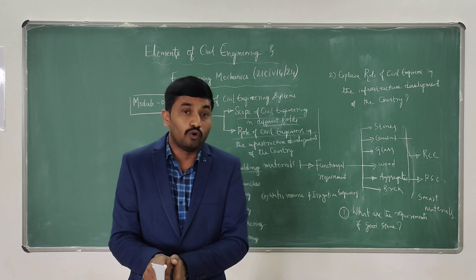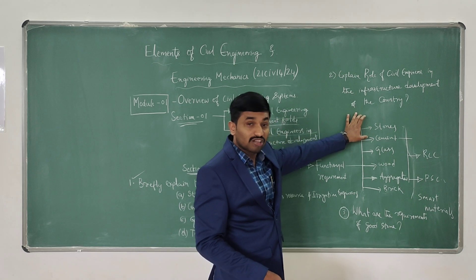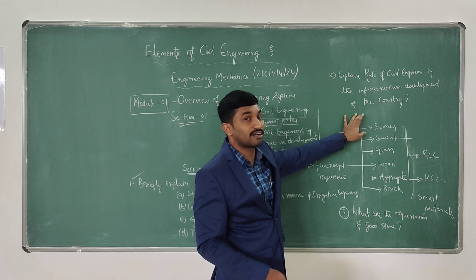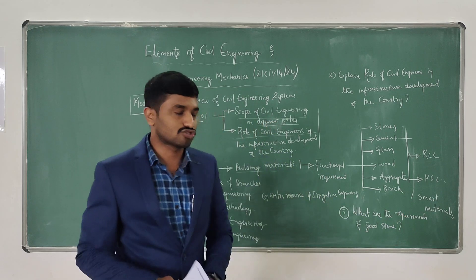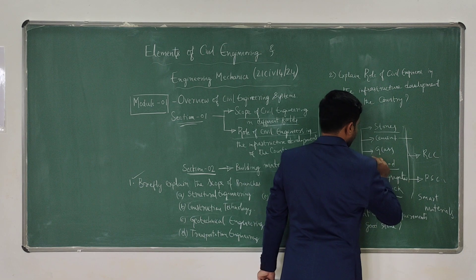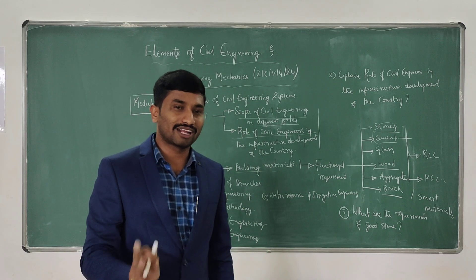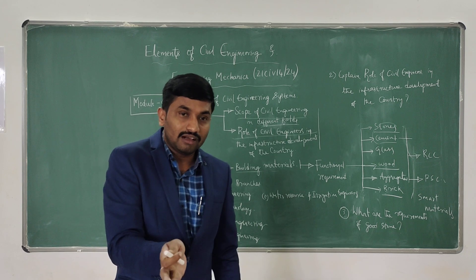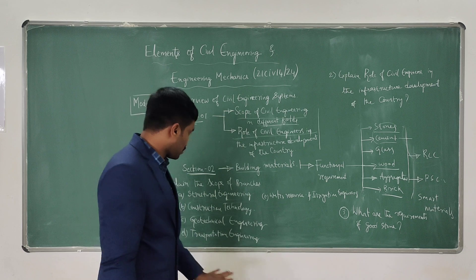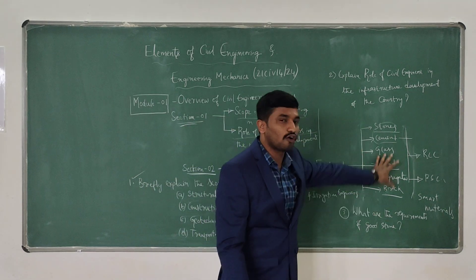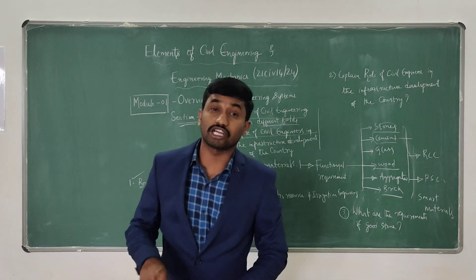From the examination point of view, my suggestion is that students need to understand the requirements for construction activity — the functional requirements of stones, cement, glass, wood, aggregate, and brick. Please read at minimum stones, wood, brick, and cement — these four are very, very important. In the first module, you are getting two questions like 1A/B or 2A/B and you have to answer any one. You need to read materials like stones, cement, wood, and brick for their requirements. Sometimes they may ask advantages and disadvantages.